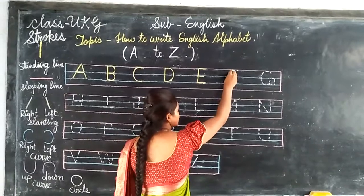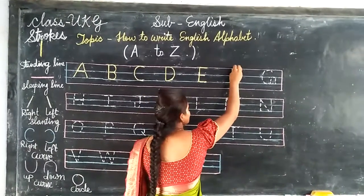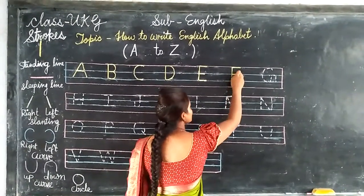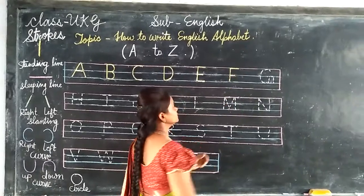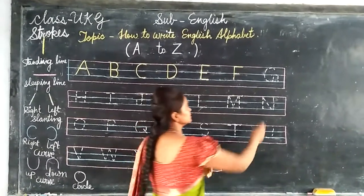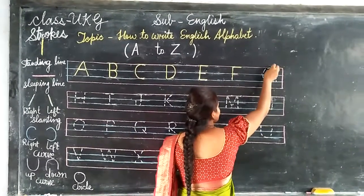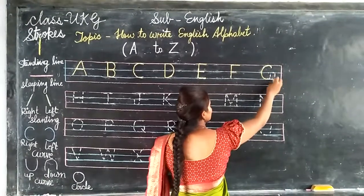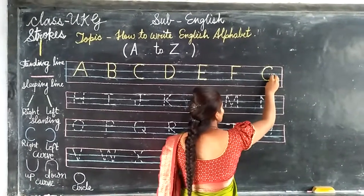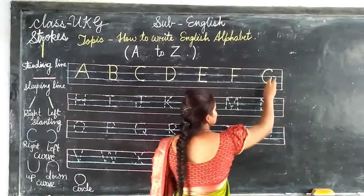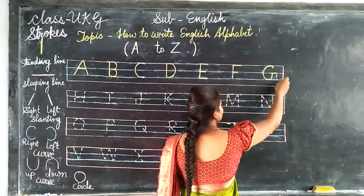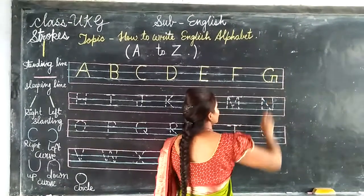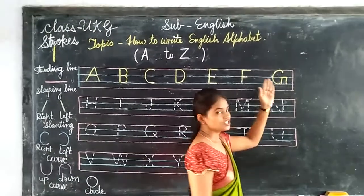Standing line, slipping line, and small slipping line. F. Right big curve, small standing line, slipping line, and standing line. G.